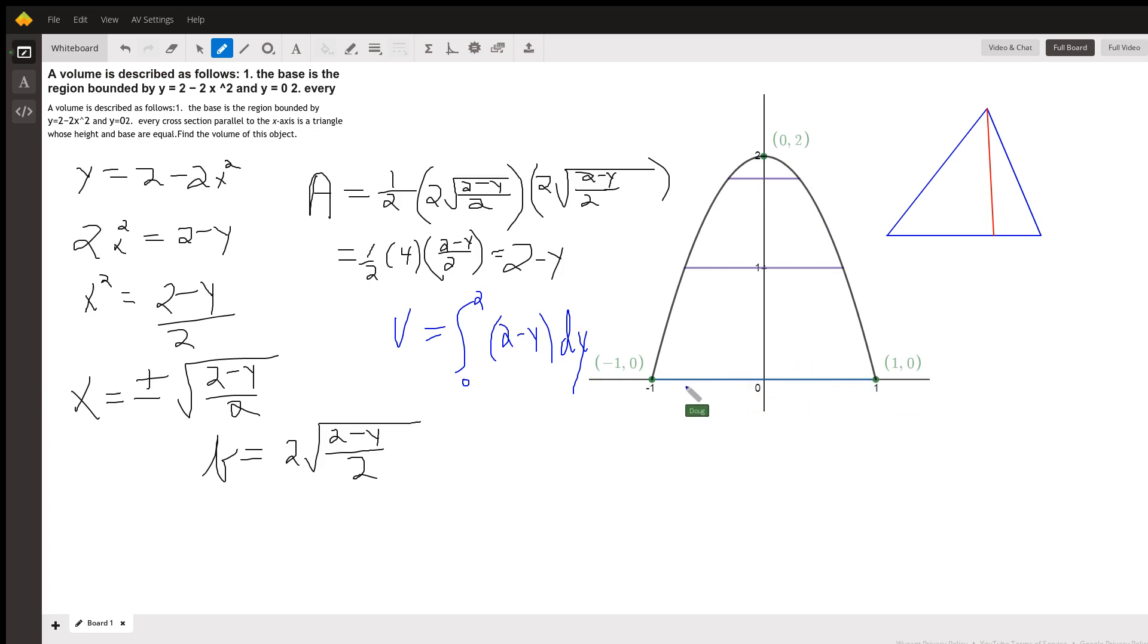We're told that every cross-section parallel to the x-axis of this solid is a triangle that has a height that's the same length as the base.